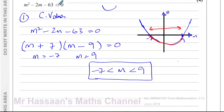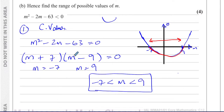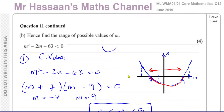If instead the inequality were M squared minus 2M minus 63 greater than 0, we'd want values above the M-axis, giving M less than negative 7 or M greater than 9. But since we want less than zero, we take the region between the roots. You can't just factorize and set each factor less than zero separately — you find where the factors equal zero, sketch the curve, and identify where it drops below the axis.